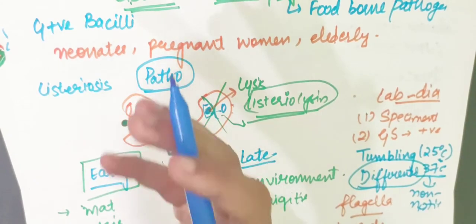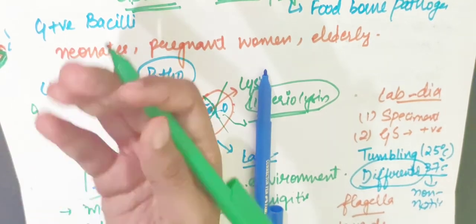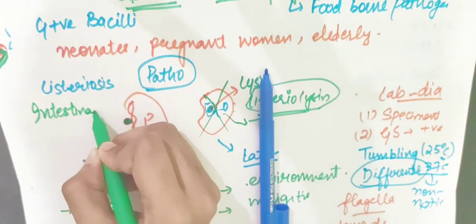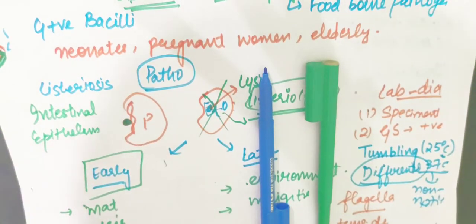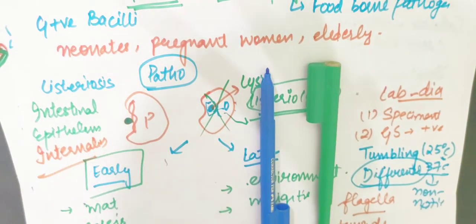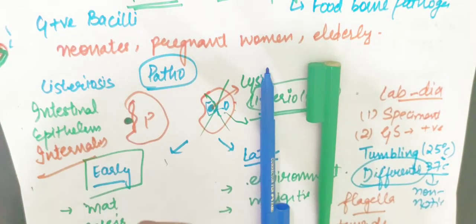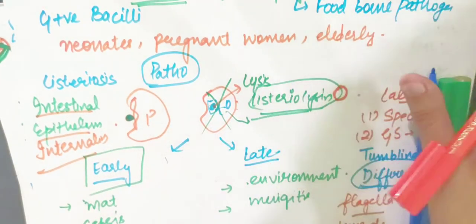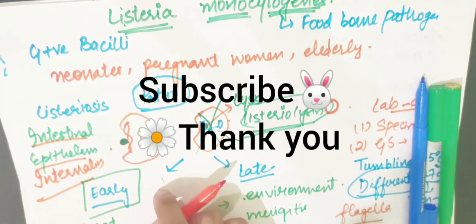In pathogenesis, the key feature is intracellular survival. The entry point is the intestinal epithelium. That was all about Listeria monocytogenes. If you have any queries you can ask, and if you like the video please subscribe. Thank you.